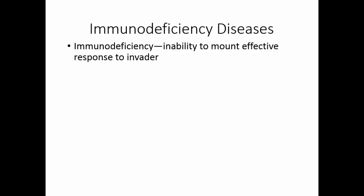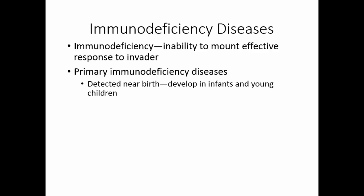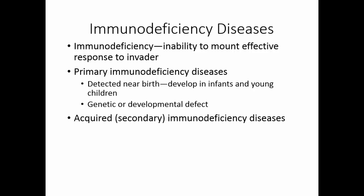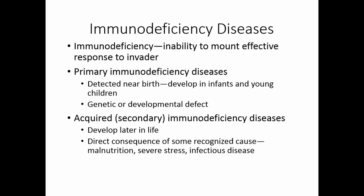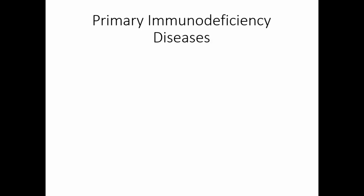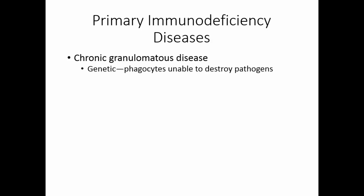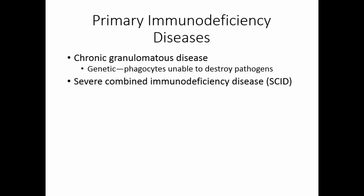Immunodeficiency diseases occur when the immune system is unable to mount an effective response to some sort of invader. Primary immunodeficiency diseases are detected near birth and develop in infants and young children — there is a genetic or developmental defect in the immune system. Acquired or secondary immunodeficiency diseases develop later in life and are the direct consequence of some recognized cause: malnutrition, severe stress, or infectious disease. The primary immunodeficiency diseases include things like chronic granulomatous disease, a genetic disease in which individuals have phagocytes that can ingest microorganisms but can't destroy them.